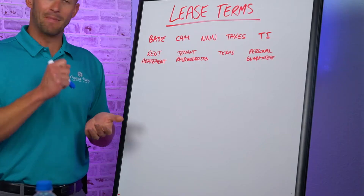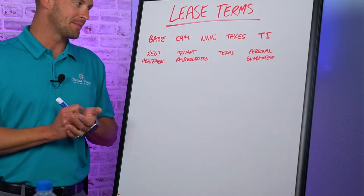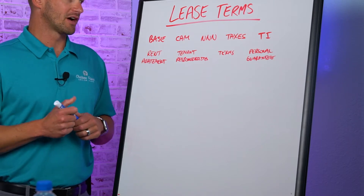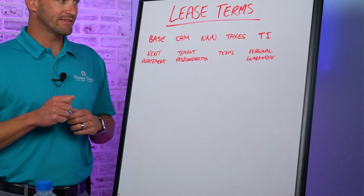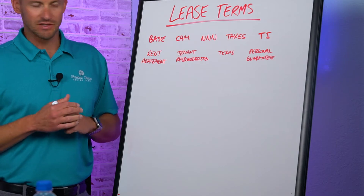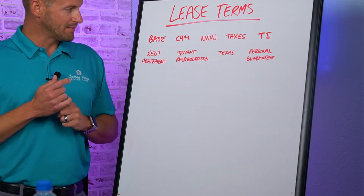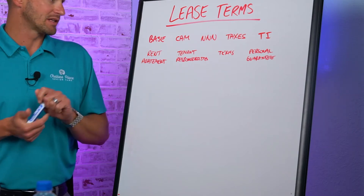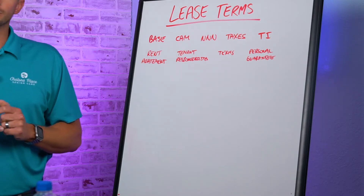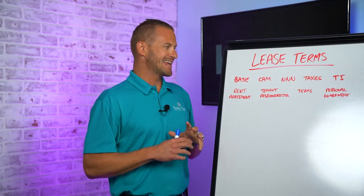We're going to talk about the base rent, what is a CAM, triple net, taxes, TI which is tenant improvements, rent abatement, tenant responsibilities, terms, and personal guarantees.